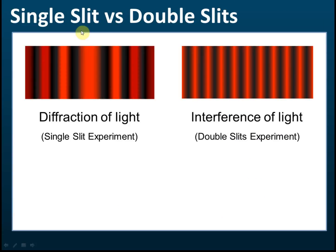Now comparing the single slit experiment with the double slit experiment: the single slit experiment is used to investigate the diffraction of light, and the double slit experiment is used to investigate the interference of light.